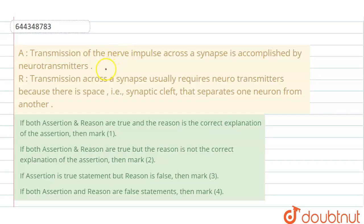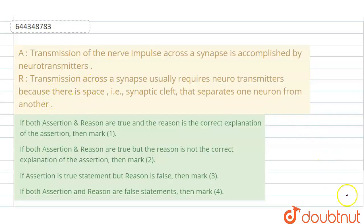Hello. Here's the question — it's an assertion and reason type. In this question, we have to discuss both statements and whether these statements are true or false. If assertion and reason both are true statements, then we have to discuss whether the reason is the correct explanation of assertion or not.